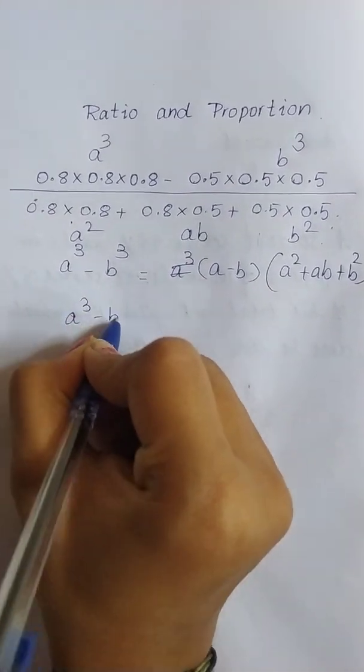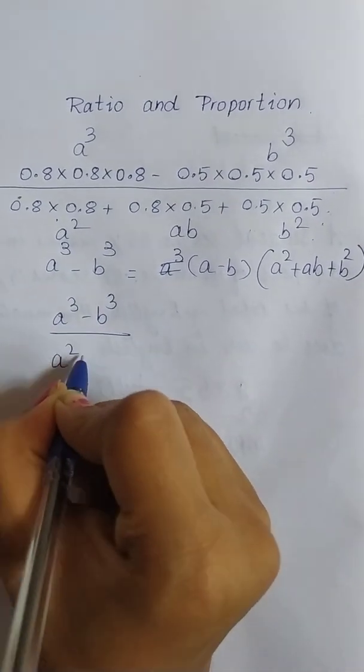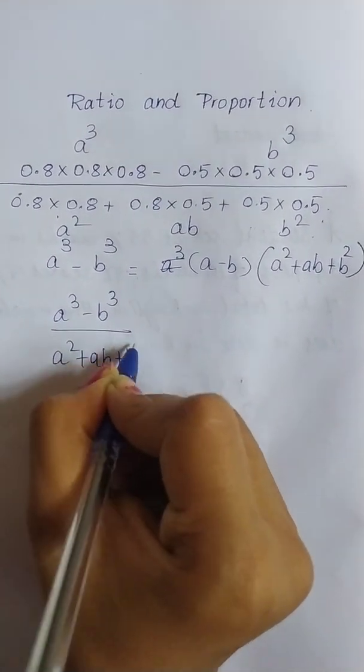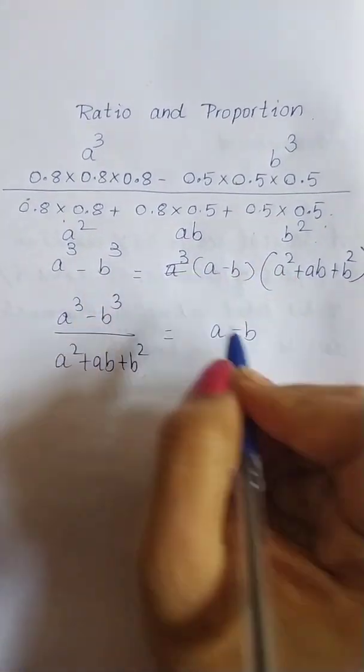It is like A cube minus B cube by A square plus AB plus B square. So, hence which is equal to A minus B with this formula.